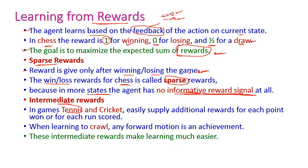The second type is intermediate reward. Taking a tennis game as example: after winning each point we get a reward. Similarly in cricket, after each run we get a score. Or consider a newborn baby learning to crawl — for every forward motion the achievement is given. So intermediate rewards make learning much easier.